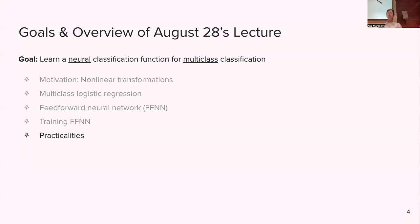We covered why we need nonlinear transformations, extended logistic regression from binary to multi-class, and that was a building block to introduce a feed-forward neural network. Then we looked at how to train it — we introduced the notion of chain rule. And I said we won't be calculating all these gradients by hand anymore; we are going to be using PyTorch, a library we'll go into more depth on next time.